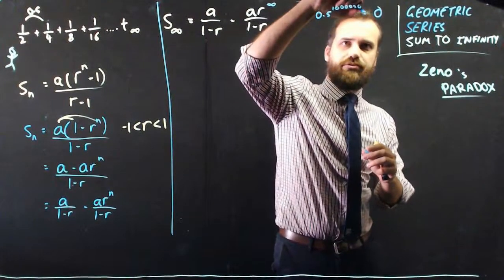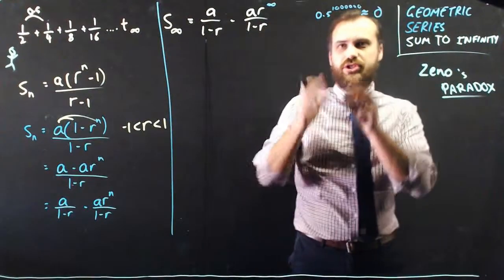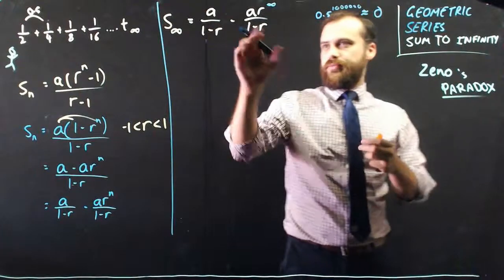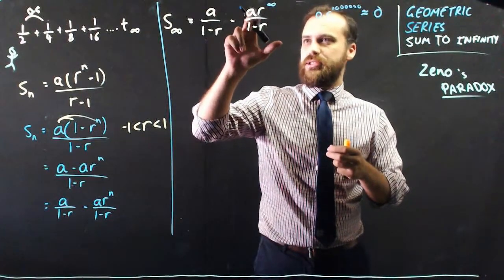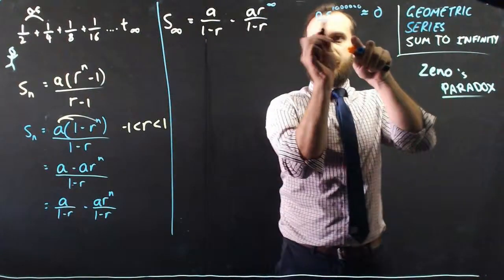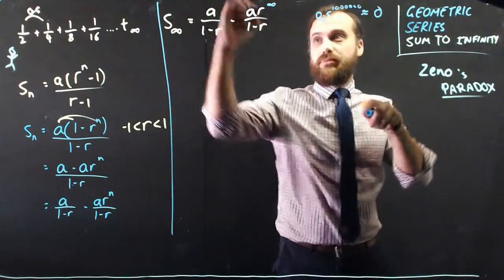Now, your calculator is rounding there. It's not 0. It's just so close to 0 that it may as well be 0. So, whatever the first term is, times r to infinity, and now we know that any decimal to the power of a really large number is going to be 0.